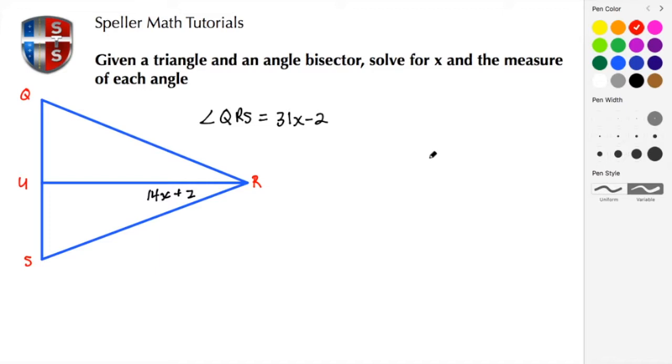Here we have triangle QRS. We see that we have the angle bisector which is UR, and UR creates two congruent angles. One of them is angle QRU and the other one is angle URS. We're also given angle QRS, which is this larger angle, and we see that it comprises both of the congruent angles.